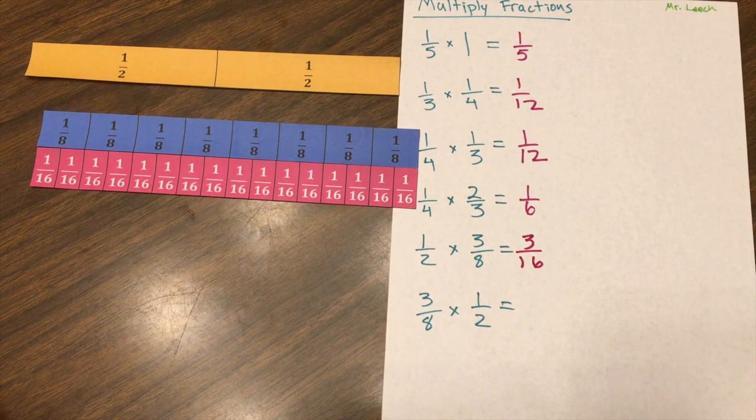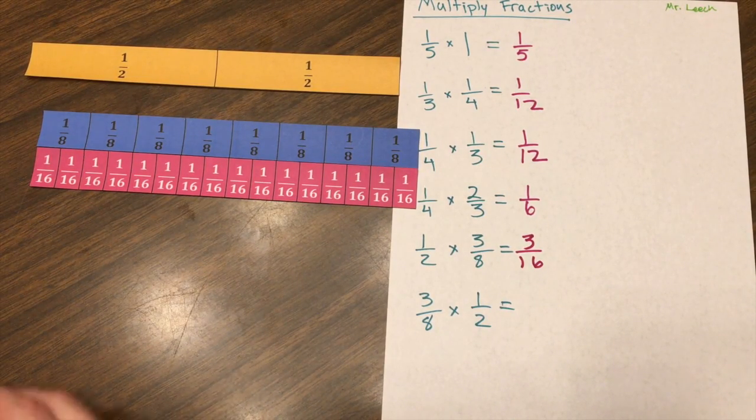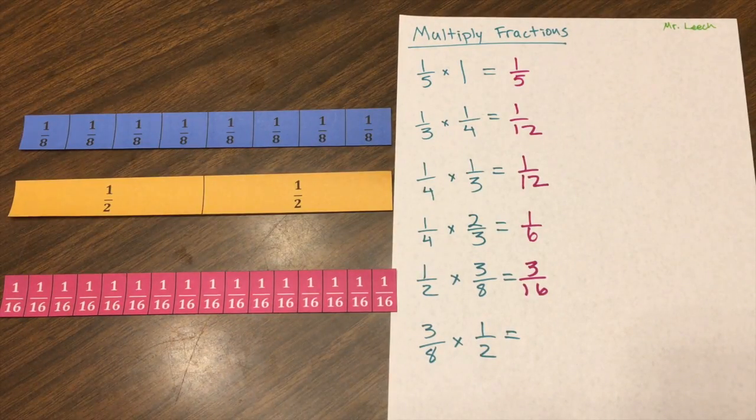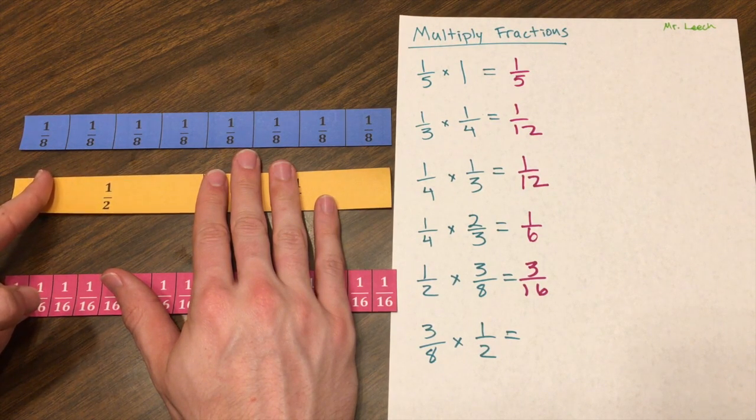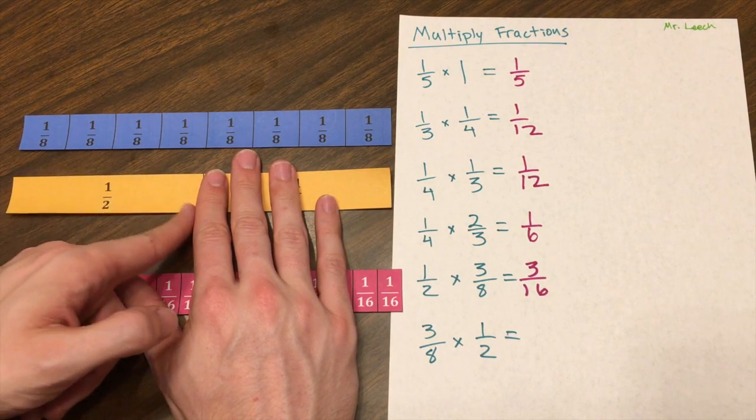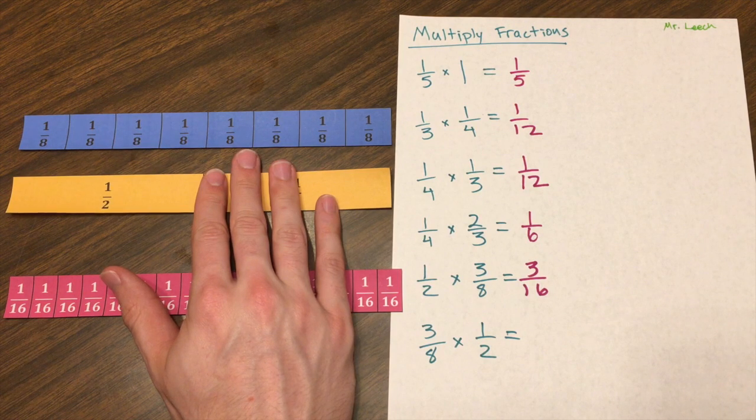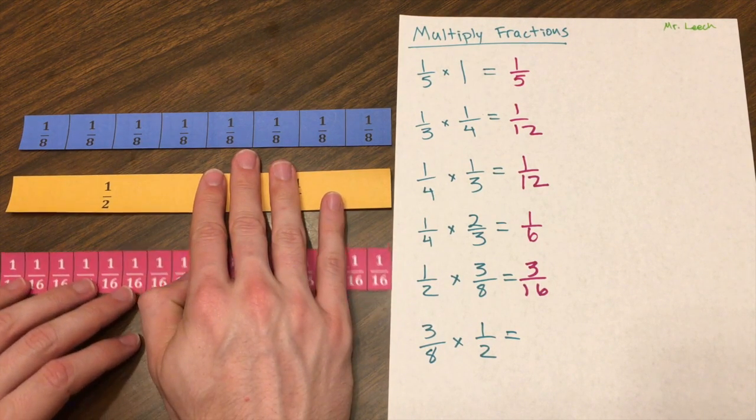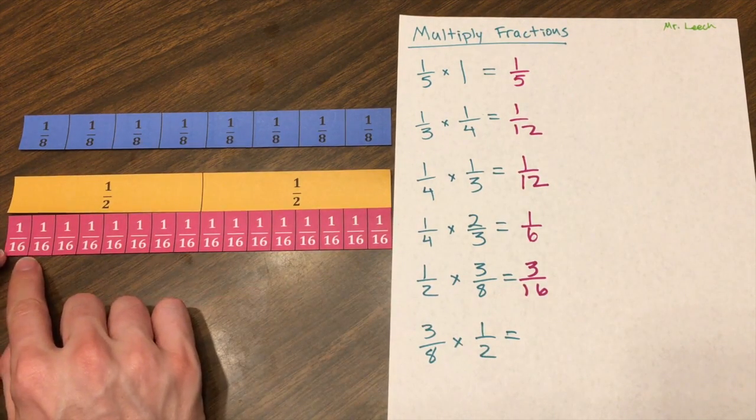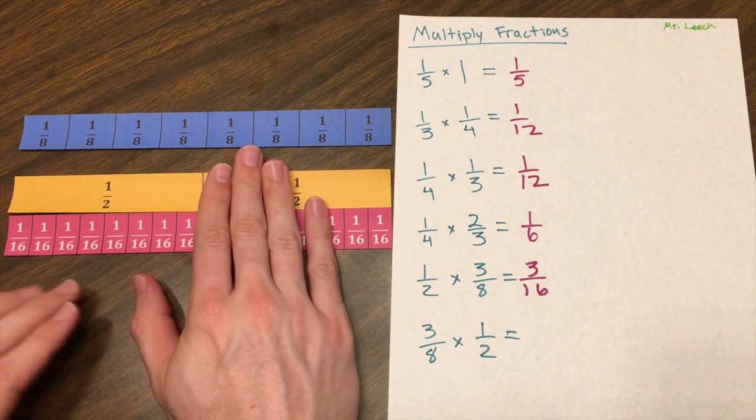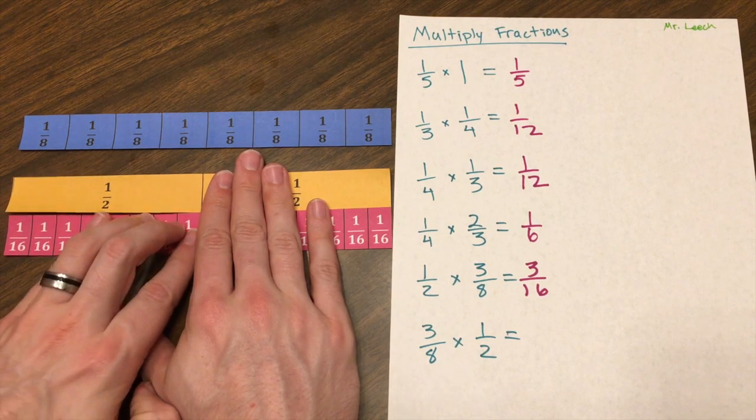Again, is multiplication commutative? Yes, it is. So if I switch this around, three-eighths of one-half. So if I take the one-half and imagine separating this into eight equal parts and counting three of them, that's going to be my solution. It should be the three-sixteenths again. If you look, one-sixteenth does line up and does cut into eight equal parts. And so I just need three of those, which is then three-sixteenths.